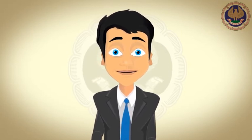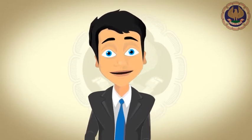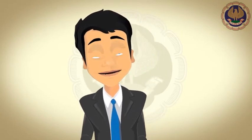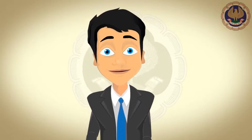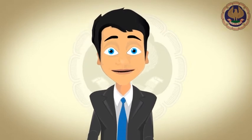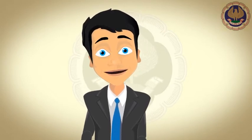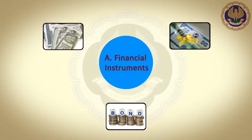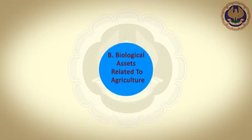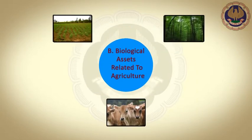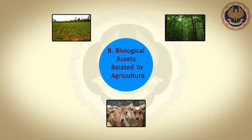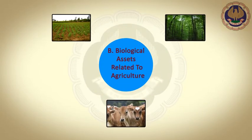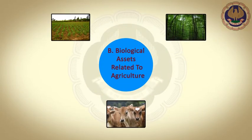Let us first understand the scope of AS2. AS2 applies to all inventories except: A. Financial Instruments, and B. Biological Assets Related to Agriculture.